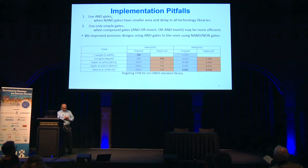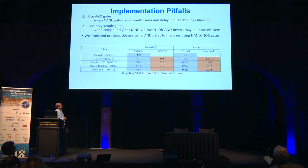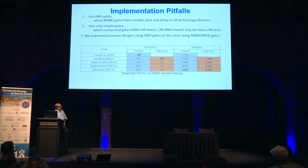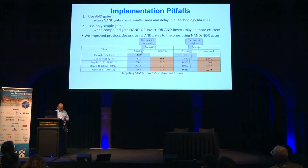This table shows the implementation in CMOS 65 nanometer technology available at Western University, showing different designs in terms of area and delay. Area was measured by gate equivalent — the two-input NAND gate equivalent. As you see, the improved designs, compared to the original ones, have lower area and are faster than their counterparts. The smallest original, fastest original, smallest improved, and fastest improved are shown here.